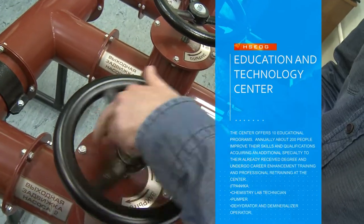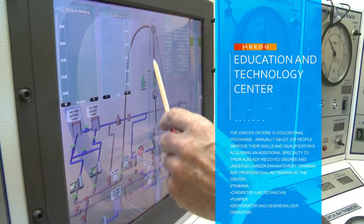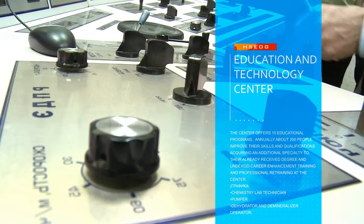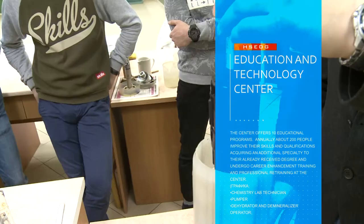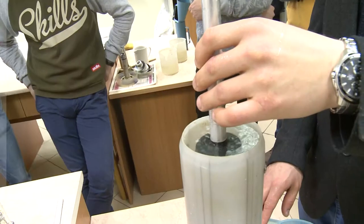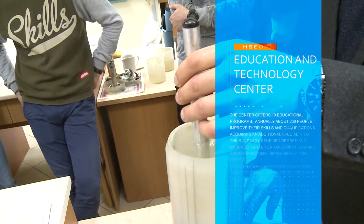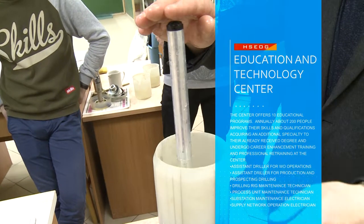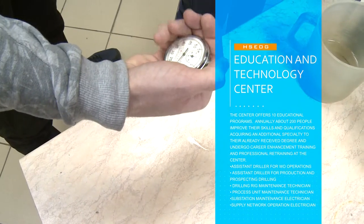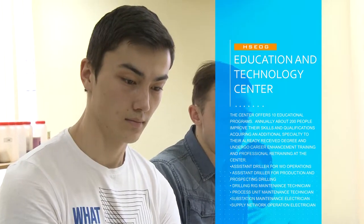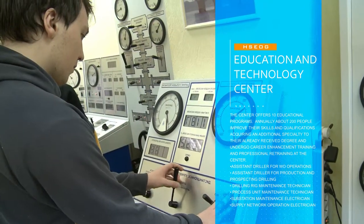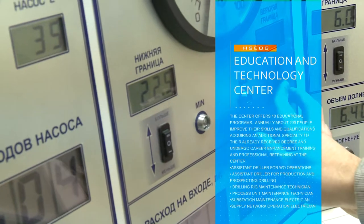Education and Technology Center. The main line of activity of the Education and Technology Center consists in training qualified workers for oil and gas industry and energy sector. The Center offers 10 educational programs. Annually, about 200 people improve their skills and qualifications, acquiring an additional specialty to their already received degree, and undergo career enhancement training and professional retraining at the Center.